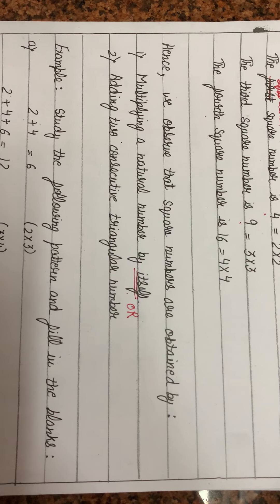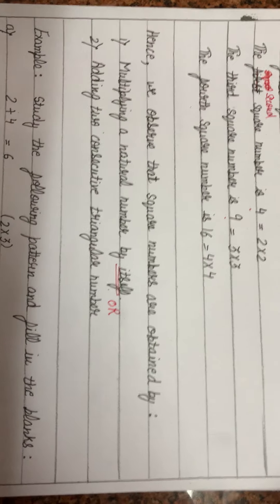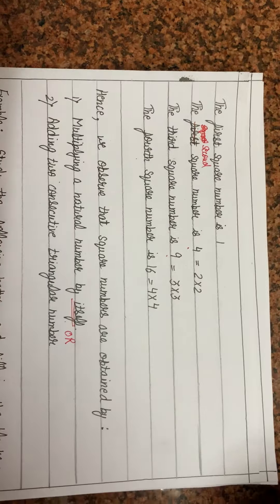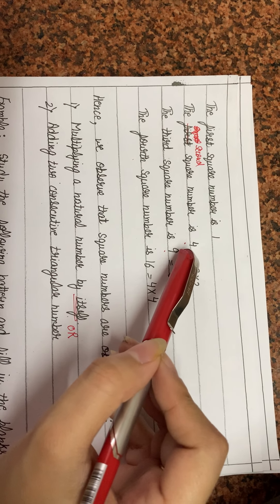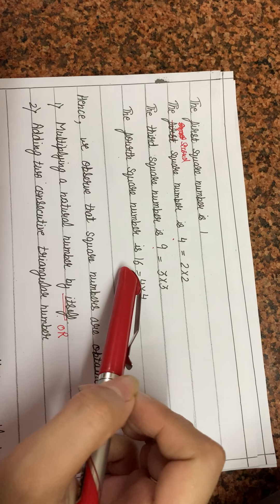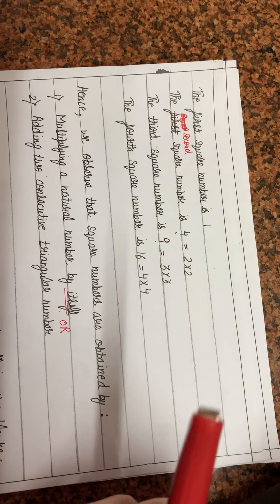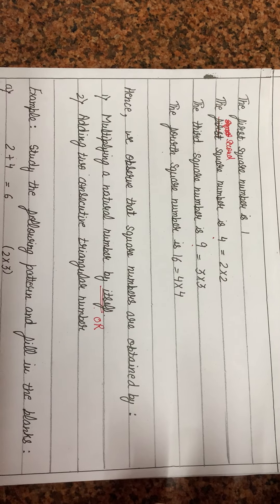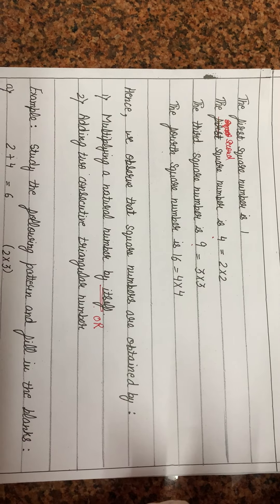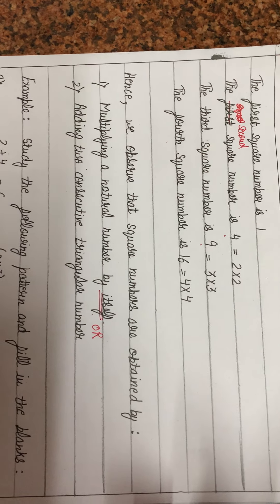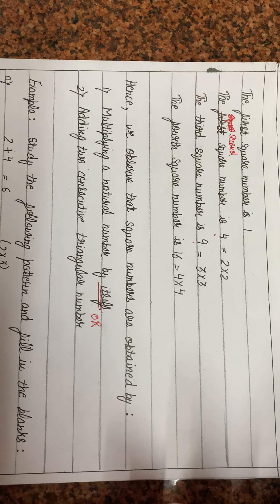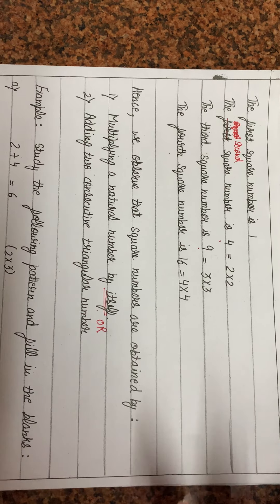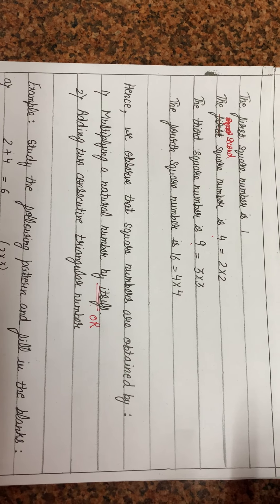We follow a pattern in square numbers: 1, 4, 9, 16. If asked for the fifth, do 5×5=25. The sixth: 6×6=36. For any square number, multiply that number by itself. For triangular numbers, use the formula n(n+1)/2. I hope these two patterns are clear to you.